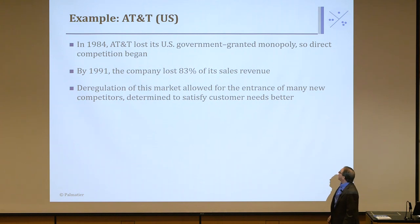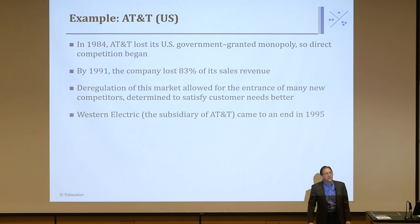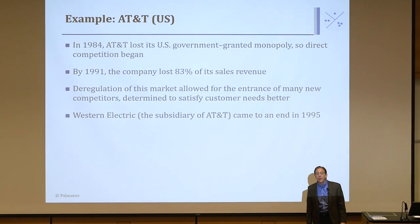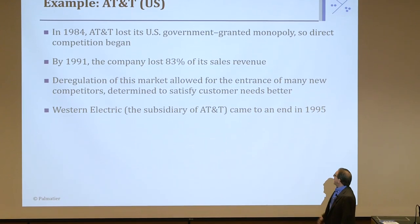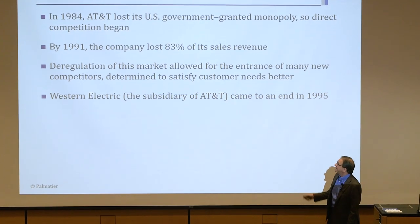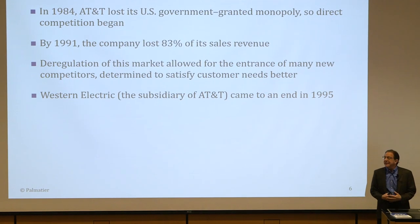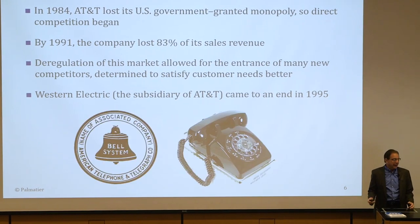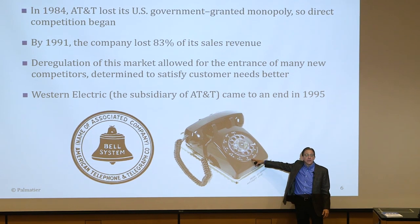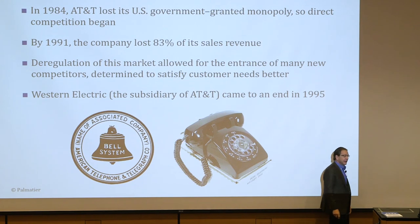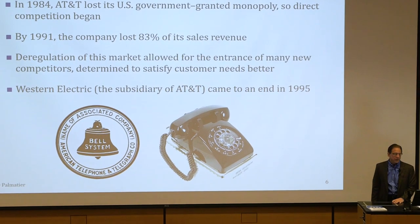The deregulation allowed the entrance of many new competitors to satisfy customer needs. Western Electric, the division of AT&T that made all the electronic equipment, came out of business in 1995 — about 11 years after deregulation. They could never adapt to the idea of customer heterogeneity. They had made and sold that same phone for over 10 years. Now we do very sophisticated products with new iterations every six months.